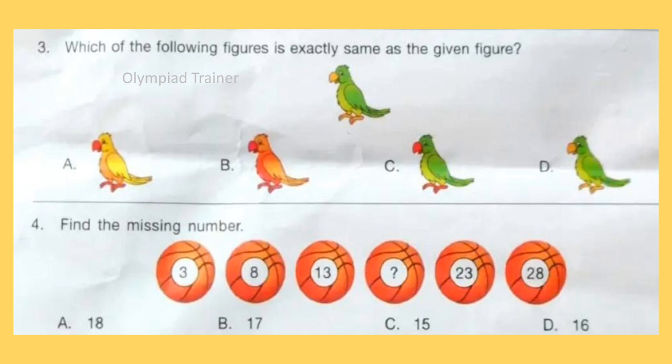Question 4: Find the missing number. Series is 3, 8, 13, dash, 23, 28. Answer is Option A, 18. 5 is added in each number. 3 plus 5 is 8, plus 5 is 13, plus 5 is 18.